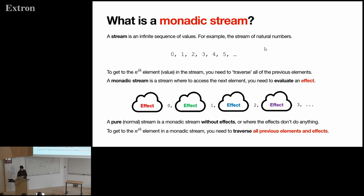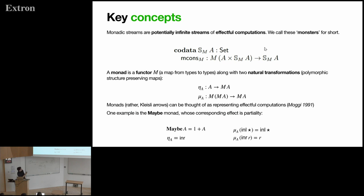So this is the data type of monadic streams. You can see it takes a functor M as a parameter and a set A. We refer to this element here as the head, and then the nested monadic stream is its tail. So as I said on the previous slide, we think of each element of the stream as being guarded by an effect of some kind. It's useful to use monads to model these effects because they give a notion of sequencing multiple effects, which allows you to step down the stream.